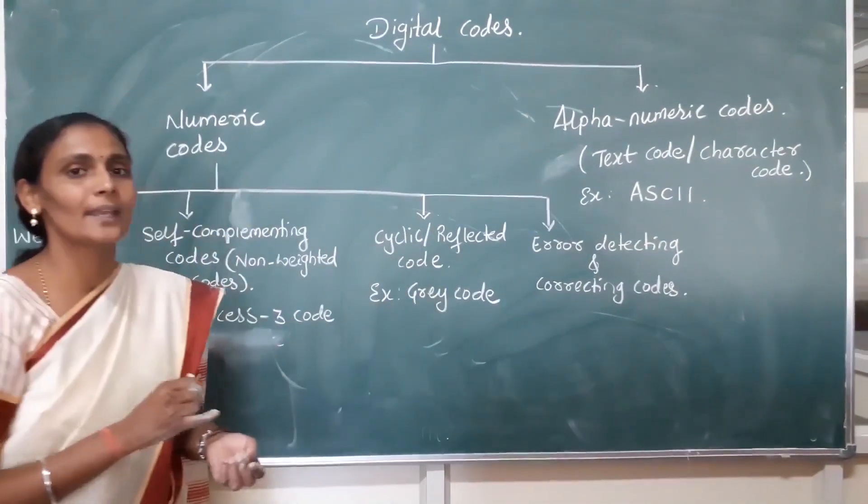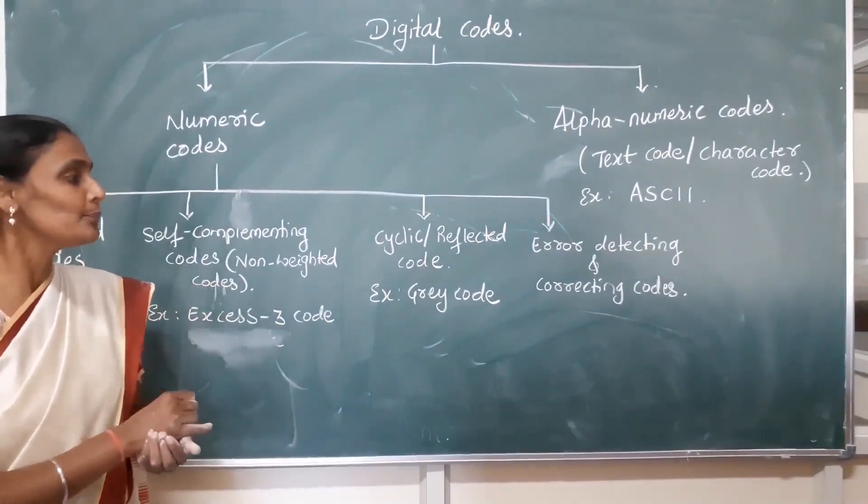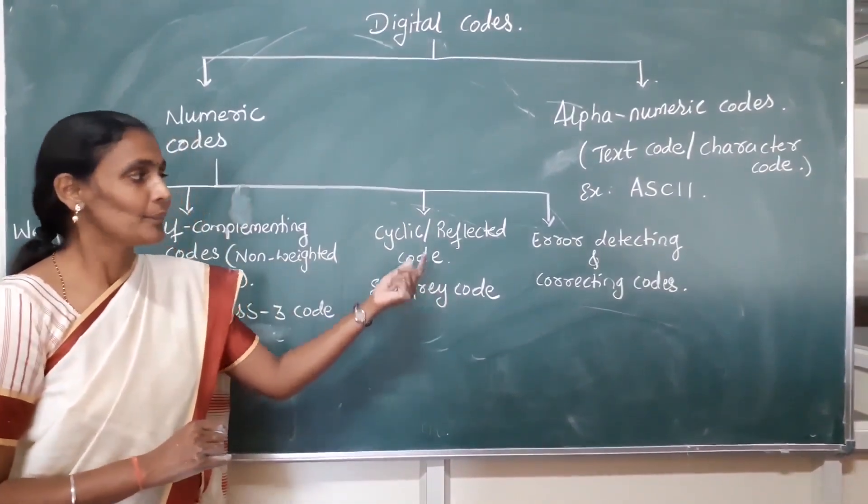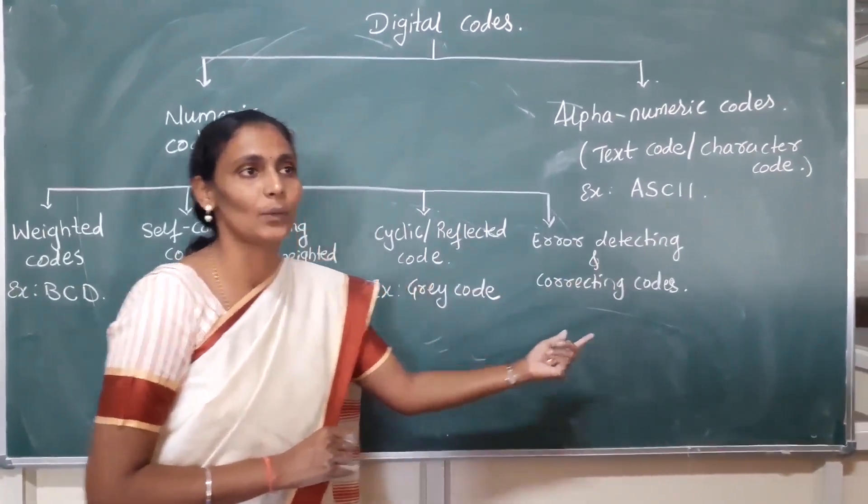As the name indicates, they deflect the values, and the example for it is the Grey code. The last type is error detecting and correcting code.